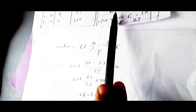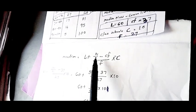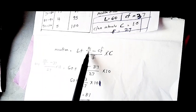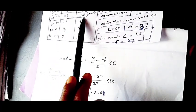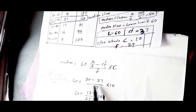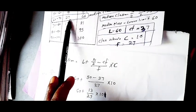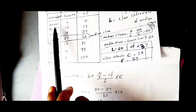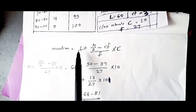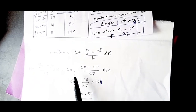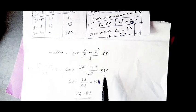Now the median formula is L plus n by 2 minus cf by f into c. L is 60, n by 2 is 80, minus cf is 37, by f which is 27, into c which is 10. That gives 60 plus 90 minus 37 by 27, which is 15 by 27, approximately 18.